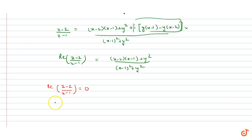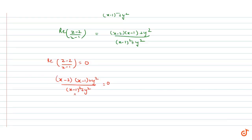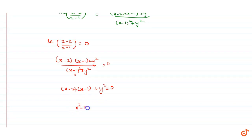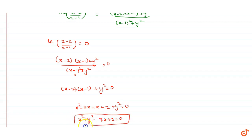We are given that the real part of (z - 2)/(z - 1) = 0. So we set [(x - 2)(x - 1) + y²] / [(x - 1)² + y²] = 0. The denominator is always not equal to zero, so the numerator must equal zero: (x - 2)(x - 1) + y² = 0, which gives x² - 3x + 2 + y² = 0, i.e., x² + y² - 3x + 2 = 0. This is our locus.